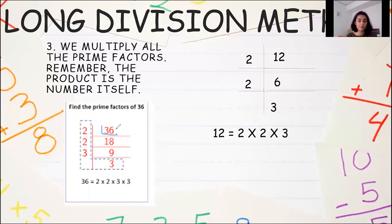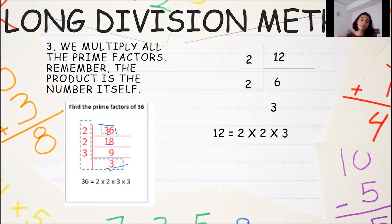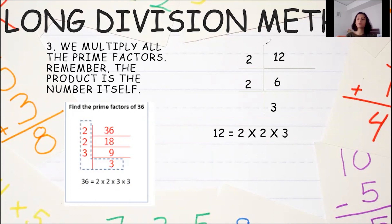Here you can also see the prime factorization of 36 — an image is attached. You divide 36 by 2 because 2 is the smallest prime number that divides 36 exactly. Then 36 divided by 2 gives 18. 18 divided by 2 gives 9. And 9 divided by 3 gives 3. We stop there because our next quotient would be 1. So we multiply all the prime numbers: 2 into 2 into 3 into 3. 2 into 2 gives 4, 4 into 3 gives 12, and 12 into 3 gives 36. So the prime factorization of 36 is done.